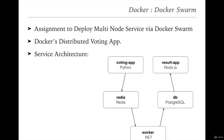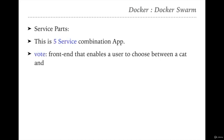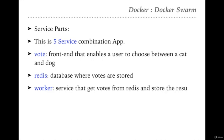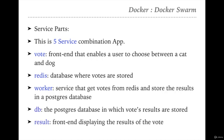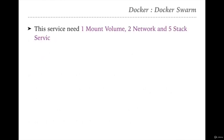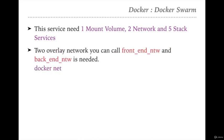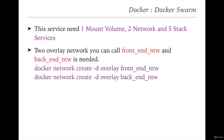We need to implement five services: vote, Redis, worker, db, and result. I have already posted some hints to deploy the same. As mentioned, it needs one mount point — we have already discussed in Docker how we can create mount points — we need two networks and five services. First we will create the networks.